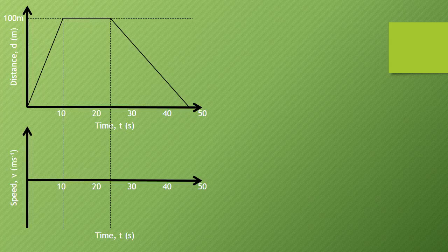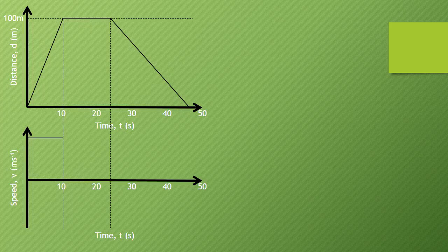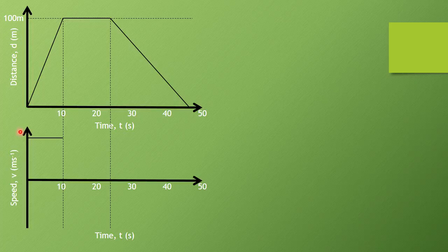In our speed time graph, when he's doing that first 10 second sprint, that is a high constant speed. Therefore it is a long way away from our speed point at the start, and it is a horizontal line showing that the speed did not change.